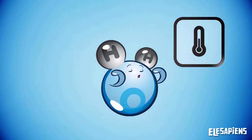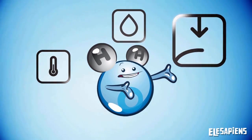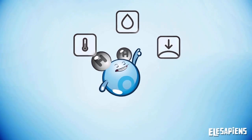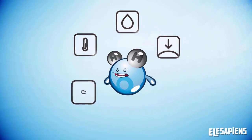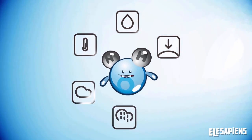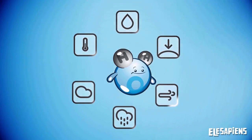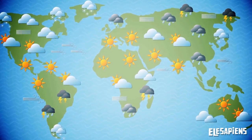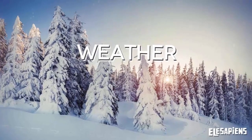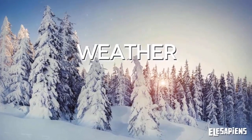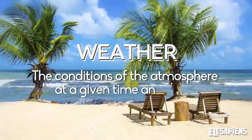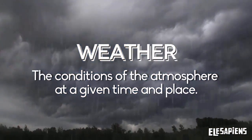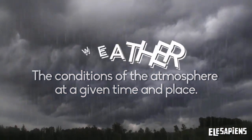Temperature, humidity and atmospheric pressure are some of the weather elements, although there are more such as cloud coverage, rainfall and wind. Weather and climate are not the same thing. Weather describes the conditions of the atmosphere at a particular time and place — here and now, the weather is cloudy and rainy.